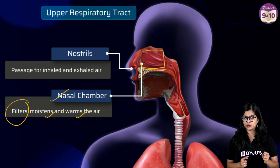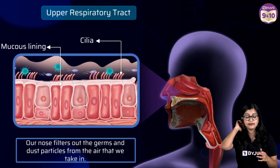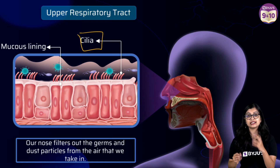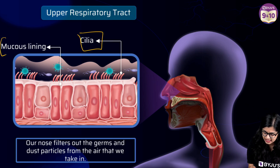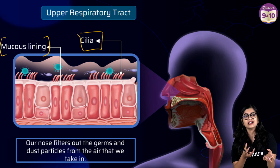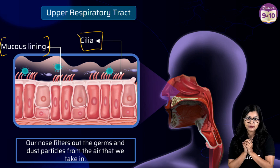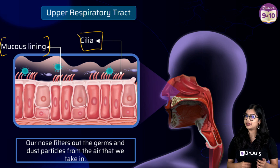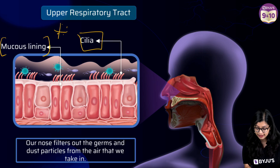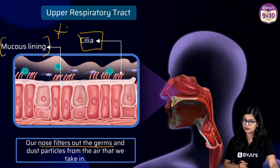How exactly does the nasal cavity filter the air? If we look closely at the inner linings of the nasal cavity, we see hair-like structures called cilia, and it also has the ability to produce a viscous fluid called mucus, forming a mucus lining. This mucus acts like slime — it traps large particles so that nothing unwanted enters further into the respiratory system. So the nose filters out germs and dust particles from the air we breathe in.